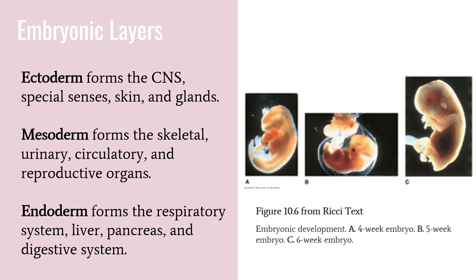The mesoderm layer forms the skeletal, urinary, circulatory, and reproductive organs. The endoderm layer forms the respiratory system, liver, pancreas, and digestive system. These are all formed at the same time as the embryonic membranes. All tissues and organ systems develop from these three layers.